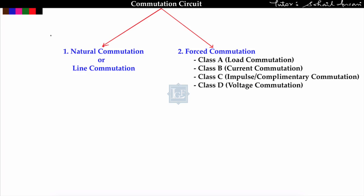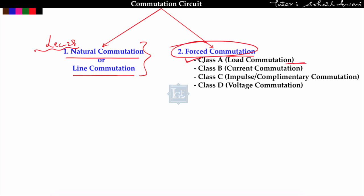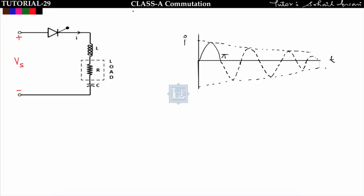In the previous lecture, lecture number 28, we talked about natural commutation or line commutation. Now in this lecture we will start Class A commutation, that is load commutation, which comes under the category of forced commutation. Class A commutation is known as load commutation.